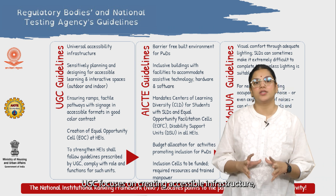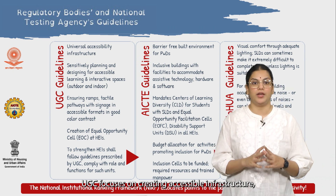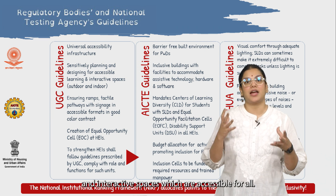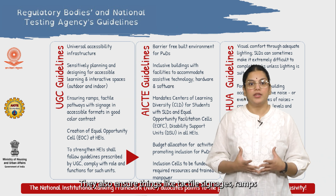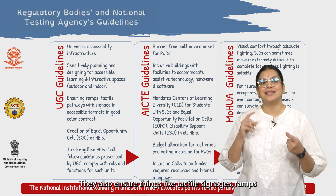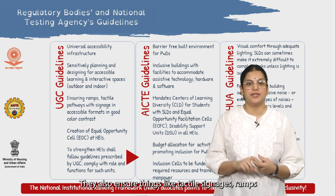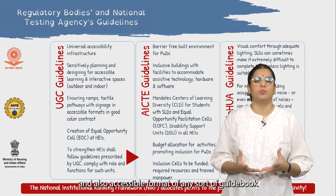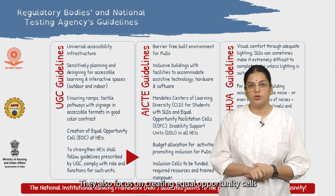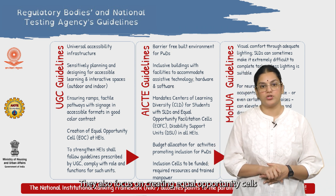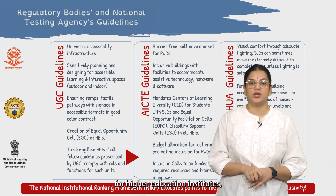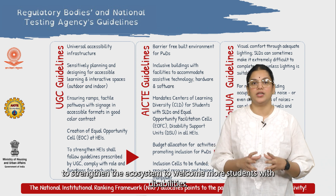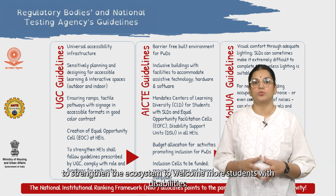UGC focuses on creating accessible infrastructure and learning and interactive spaces which are accessible for all. They also ensure things like tactile signages, ramps, and accessible formats of any guidebook available on campus. They also focus on creating equal opportunity cells for higher education institutes, and these guidelines are prescribed to strengthen the ecosystem to welcome more students with disabilities.